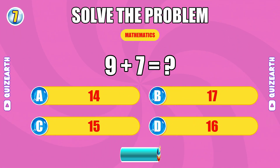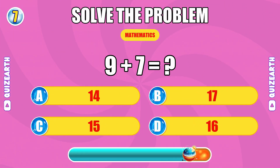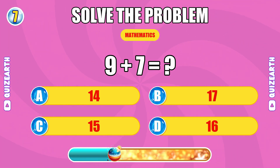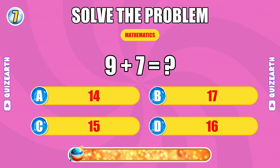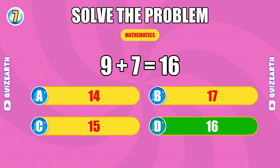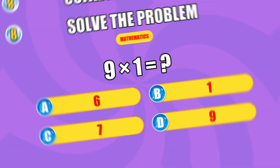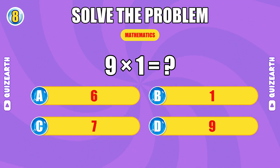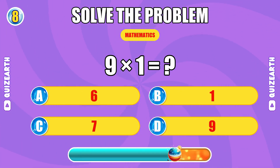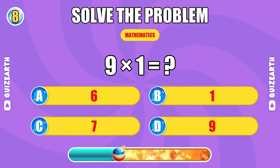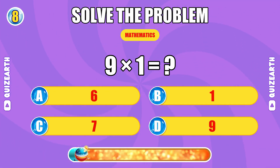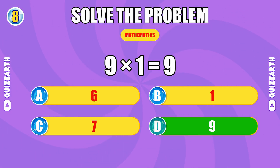How much is nine plus seven? Keep rolling — the answer is 16. What is nine times one? Speedy — the answer is nine.